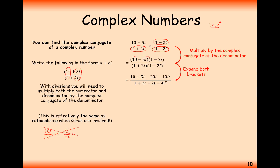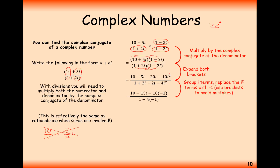Now we expand the brackets. On the top: 10 minus 20i plus 5i minus 10i squared. On the bottom: 1 minus 2i plus 2i minus 4i squared. Simplifying using i squared equals minus 1, the imaginary terms give minus 15i, and the real terms give 20 minus 15i over 5. Now that we have a real value on the bottom, we split it up: 20 divided by 5 is 4, and minus 15i divided by 5 is minus 3i. So the answer is 4 minus 3i.